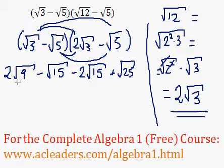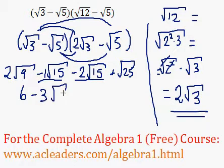So 2 times root 9. Root 9 is 3, so 3 times 2 is 6. Negative root 15 minus 2 root 15. There's a hidden one over here, so once we combine them, negative 1 minus 2, negative 3 root 15.